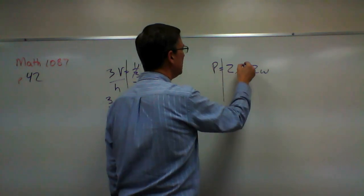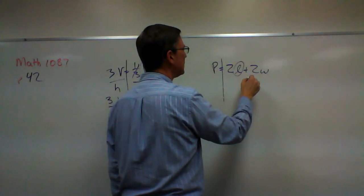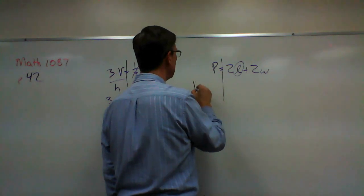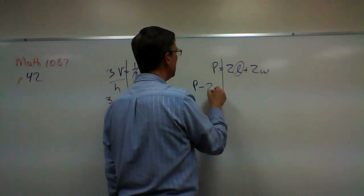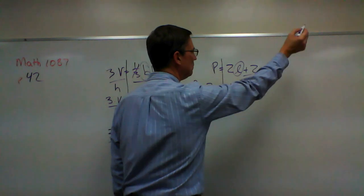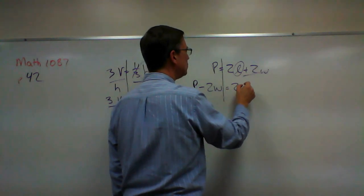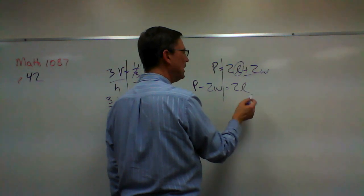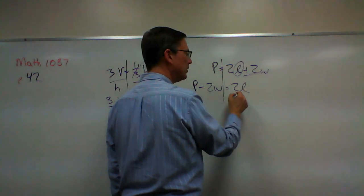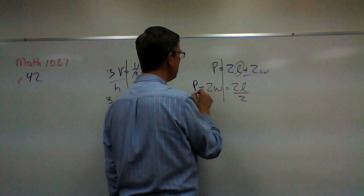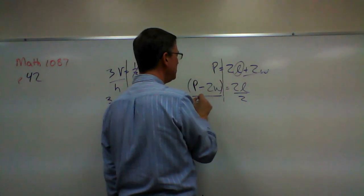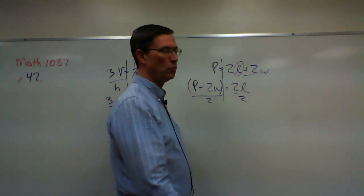So if I'm solving for that, I need to subtract the two w from both sides. So take p minus two w. All right. And that's gone. And that equals twice the length. If I'm solving for length, then that means I need to divide both sides of the equation by two.